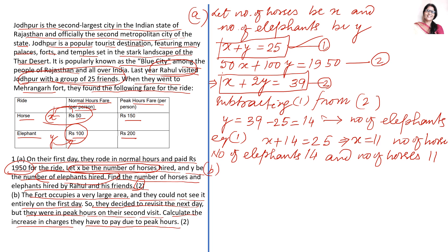Second day, they are visiting in peak hours. So for peak hours, this is the fare for horses: Rs 150. So 150 into X. For elephant, 200 into Y.